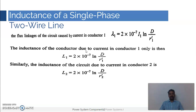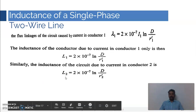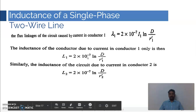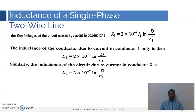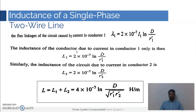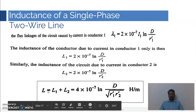The inductance of conductor one is calculated by dividing λ1 by i1, giving L1 = 2 × 10⁻⁷ × ln(d / r1'). In a similar fashion, without considering the flux linkages due to current in conductor one and considering only current in conductor two, you can derive L2 = 2 × 10⁻⁷ × ln(d / r2'). Using the superposition theorem, the total inductance is L = L1 + L2.